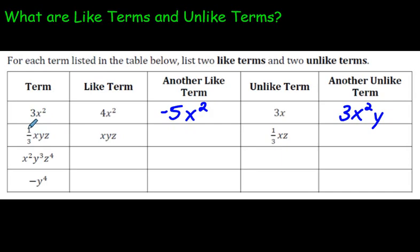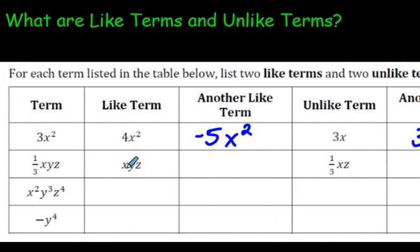So let's look at the next question. ⅓xyz. Well, a like term to that is xyz. You just look at the variables here. They have to be identical. You can tell me anything here. Negative 5xyz. As long as there's an xyz, we're good to go.